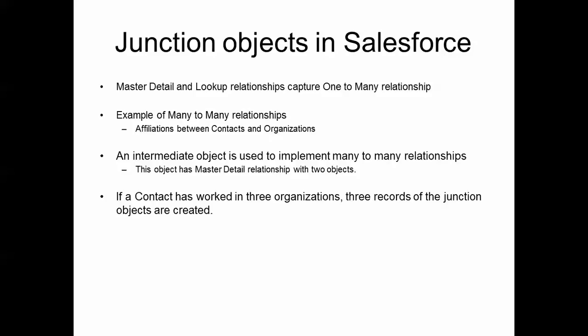In the example we discussed, this intermediate object is called Affiliation, and it has two master-detail relationships — one to Contact and one to Organization. We can have additional fields in the Affiliation object, such as the start date and end date of the relationship, and the type of relationship, like whether the person is a volunteer or an employee. The Junction object often captures additional information about the relationship between the two main objects.